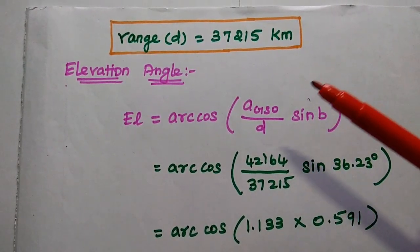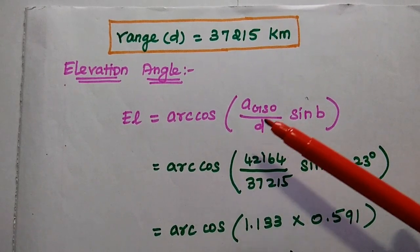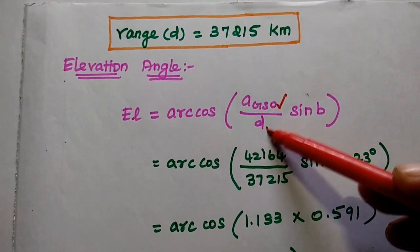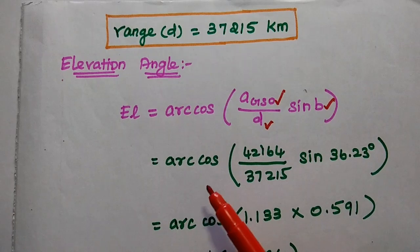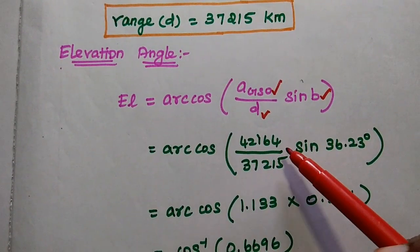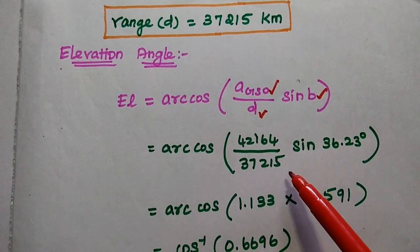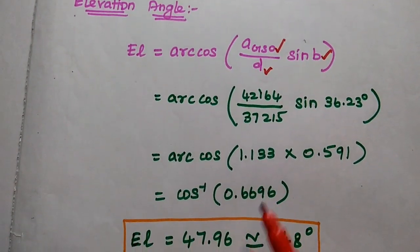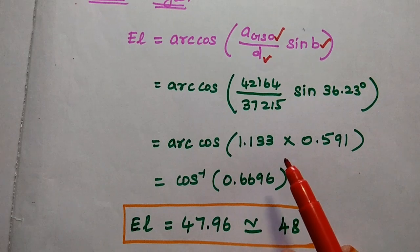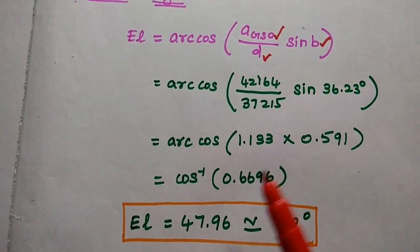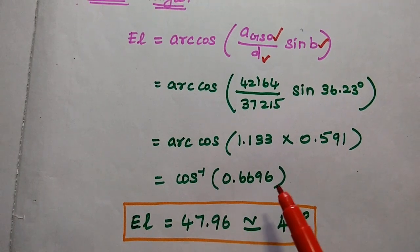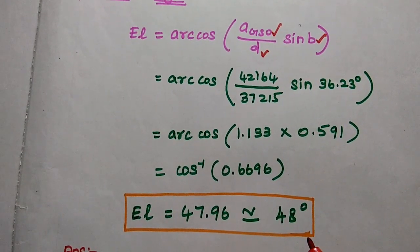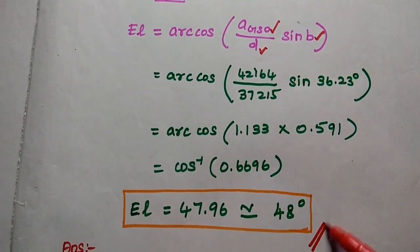Finally, we find the elevation angle using the formula: elevation equals arccos(A_GSO / D × sin b). Substituting A_GSO = 42,164, D = 37,250, and b = 36.23°, we get arccos(1.133 × 0.591) equals arccos(0.6696), which gives an elevation angle of approximately 47.96°, rounded to 48°.